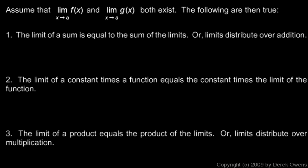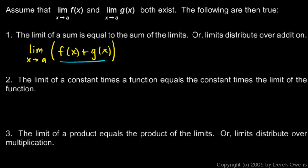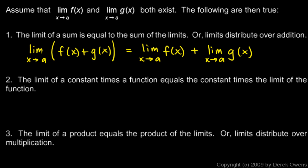Number one: the limit of a sum is equal to the sum of the limits. We can write that as: the limit as x approaches a of f(x) + g(x) equals the limit as x approaches a of f(x) plus the limit as x approaches a of g(x). That should strike you as fairly intuitive — the limit distributes across addition.